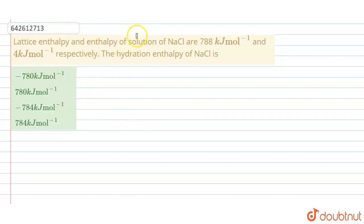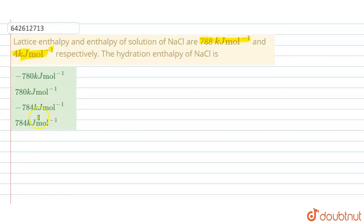The question states: lattice enthalpy and enthalpy of solution of NaCl are 788 kJ/mol and 4 kJ/mol respectively. The hydration enthalpy of NaCl is — option A: -780 kJ/mol, option B: 780 kJ/mol, option C: -784 kJ/mol, option D: 784 kJ/mol.